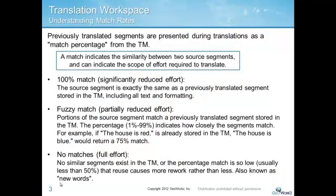Previously translated segments are stored in a TM as the translator works, and then are presented during translation as what we call matches. A match rate indicates how similar your source segment is to one that has been translated before. A 100% match indicates that the exact same segment has previously been translated and already exists in your TM. A fuzzy or partial match means that part of the segment has been translated before.